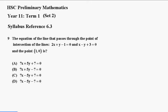Question 9. The equation of the line that passes through the point of intersection of the lines 2x plus y minus 1 equals 0 and x minus y plus 3 equals 0 and the point (1,0) is a, b, c or d.